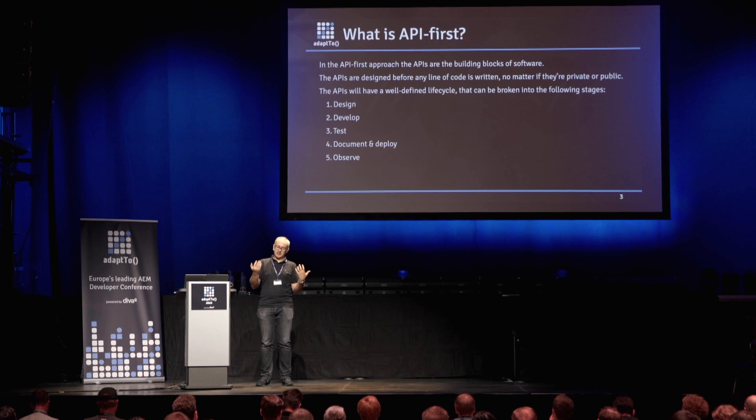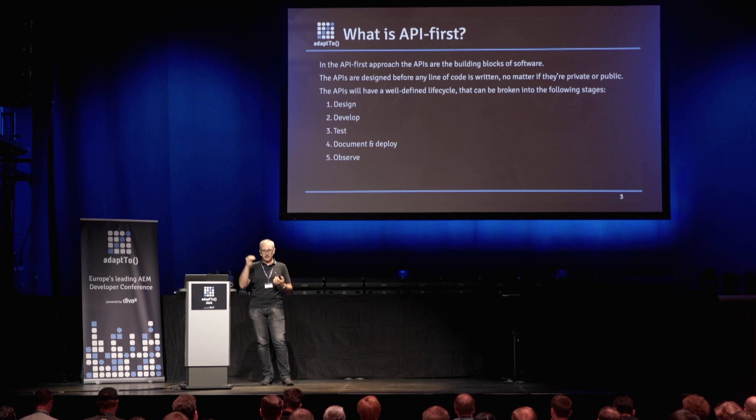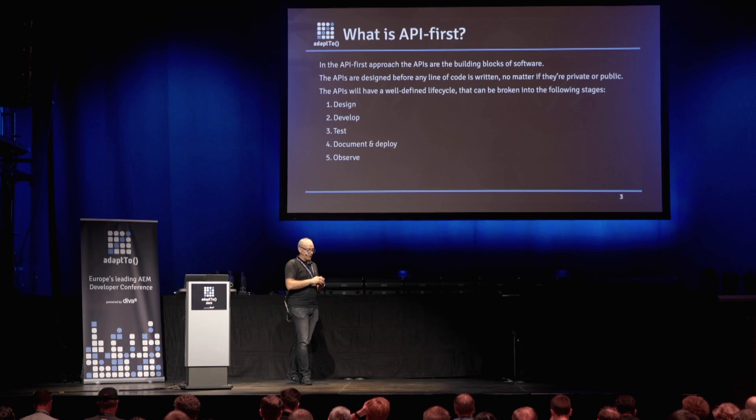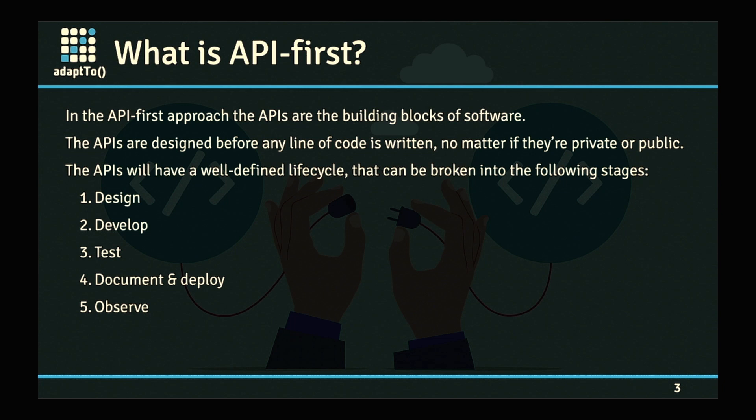Then you have the observation phase, which means your API is already deployed somewhere — it's out in the wild — and you have to figure out how it performs. Are your response times constant, or decreasing because you're optimizing? Or do you see that with every change you push, your response time increases? That's something that should give you something to think about. Are the response codes indicating that the API is used successfully — mostly replying with 200-series codes? Or suddenly you start replying with 400s or even worse, 500s? This is the phase where you figure out what are the criteria that make this API successful, and how to react fast if something goes wrong.